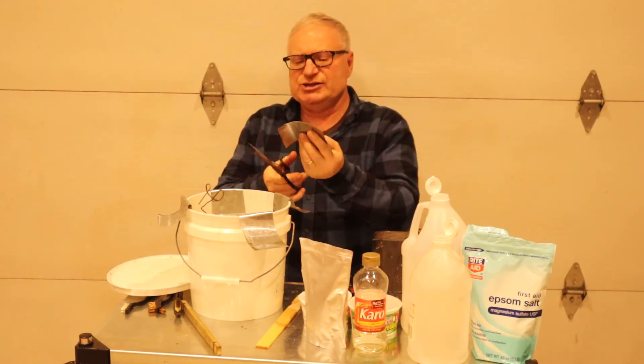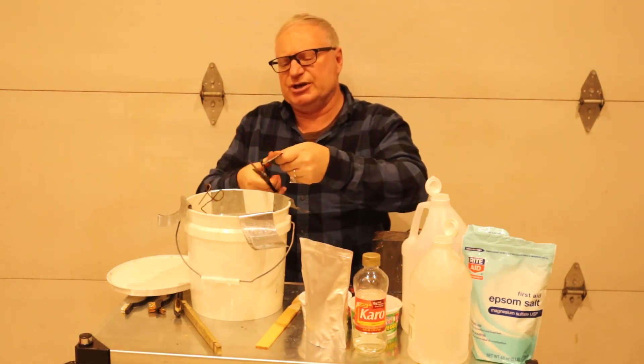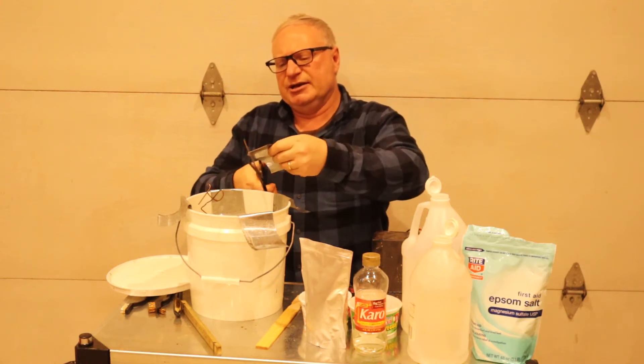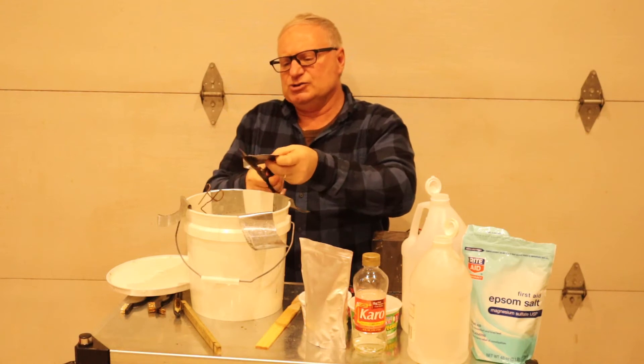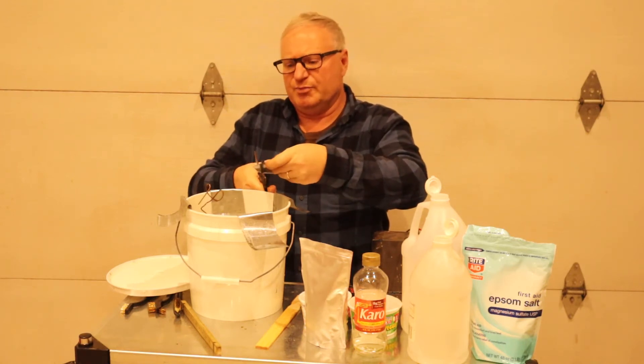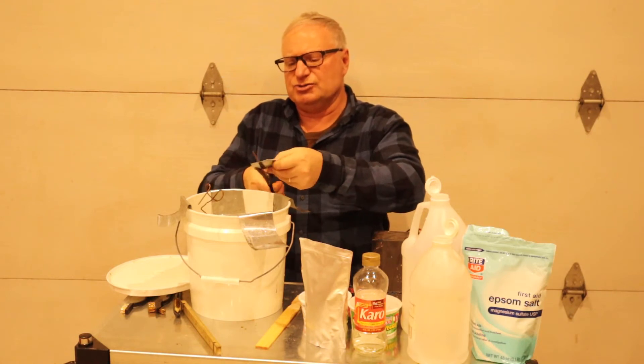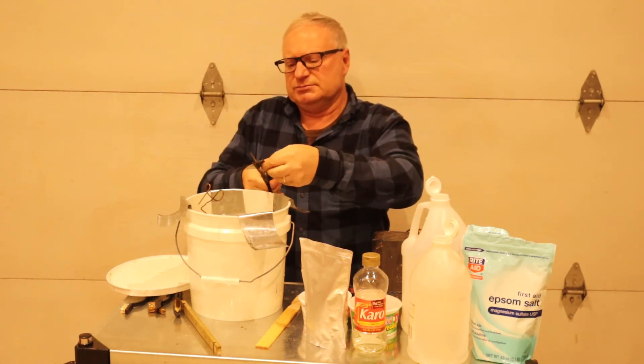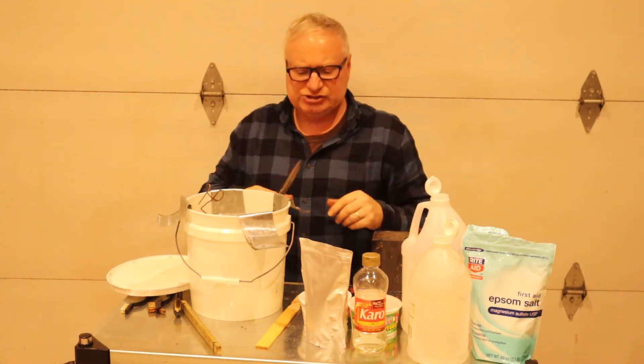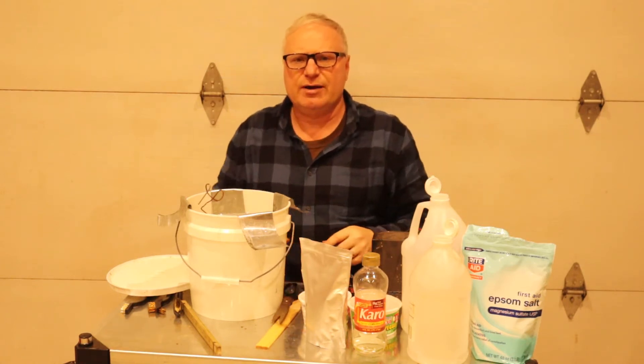If you want to get more zinc inside of this, you can take some of this flashing and just cut random pieces relatively thin. This will help start getting some of this zinc into your plating electrolyte solution. We'll let this set overnight and then come back to it.